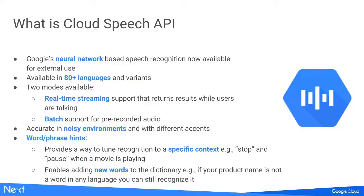So what is Cloud Speech API and why are we so excited about it? It's our neural network-based speech recognition, and we're making it available for the first time. It's universally available across 80-plus languages and variants, covering more than half the people who use smartphones today around the world. You can use it in two different modes: real-time streaming and batch.